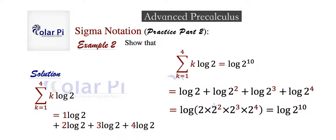And of course, using exponent rules, we can write the argument of log as 2 times 2 squared times 2 cubed times 2 to the fourth, which equals 2 to the 10th, and so we're done. Okay, cool. So example 3 is next.